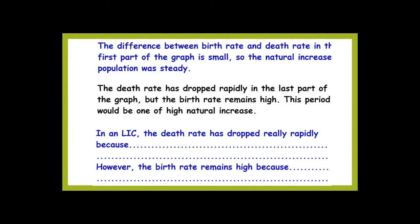So the difference between birth rate and death rate in the first part of the graph is small, meaning the natural increase was relatively small and the population was steady. The death rate has dropped rapidly in the last part of the graph, but the birth rate remains high. So the last couple of hundred years is a period of rapid population increase in LICs. The death rate dropped rapidly because medical technologies developed by HICs were shared with LICs in the last 50 to 100 years through charity work — medical care and clean water. However, the birth rate remains high because culture and tradition still encourage large families: children to look after you when old, children to help work the land, strict religion, and no access to contraception. Pause the video and summarize this analysis under your graph.